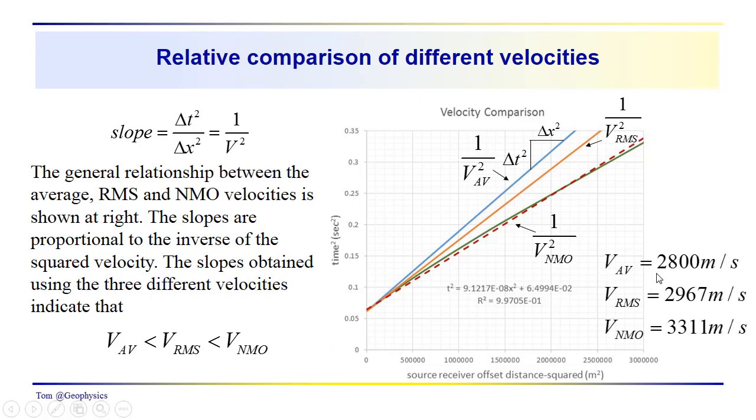And these are the values that I came up with, 2800 meters per second average, 2967 for the RMS, and 3311, which we got from the Dix equation.